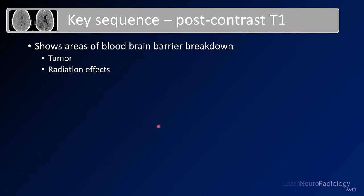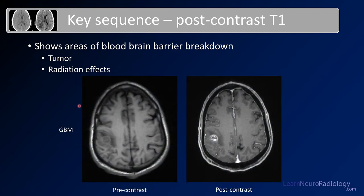The second key MRI sequence is the post-contrast T1, which shows areas of blood-brain barrier breakdown. That can be areas of tumor where the blood-brain barrier no longer exists, or from radiation effects causing injury to the blood-brain barrier. Here you see a pre-contrast image with a rounded lesion in the right posterior frontal lobe, with surrounding edema dark on T1. When you give contrast, the most infiltrative and aggressive areas of tumor — where there is blood-brain barrier breakdown — show contrast leaking into the tissue. That enhancing portion is the most concerning area of the mass.